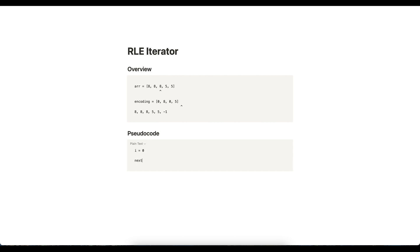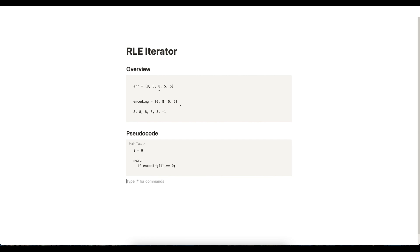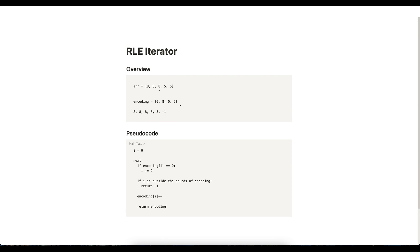In pseudocode: start with i=0. In the next method, if encoding[i] equals 0, increment i by 2. If i is outside the bounds of encoding, return negative 1. Decrement encoding[i], then return encoding[i+1] since that's the actual value. However, this doesn't work on all valid encodings — it's a great start but it breaks down for certain cases.